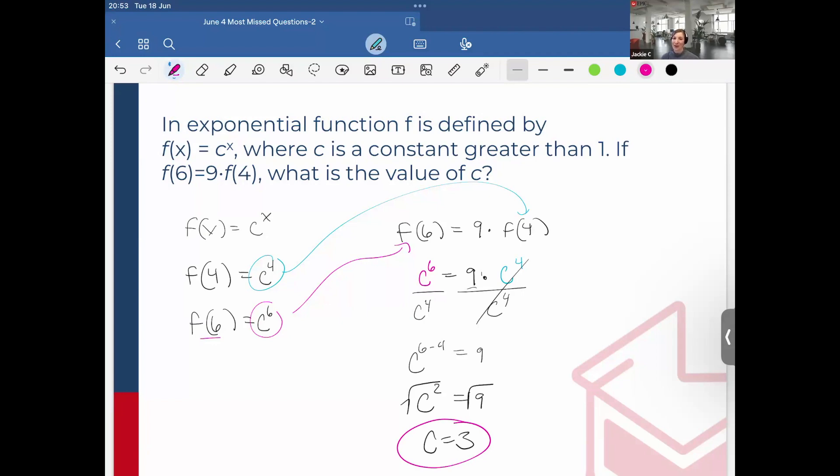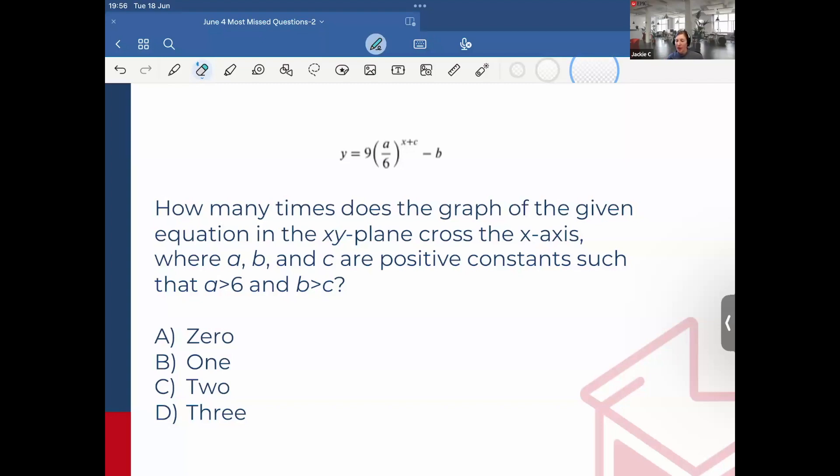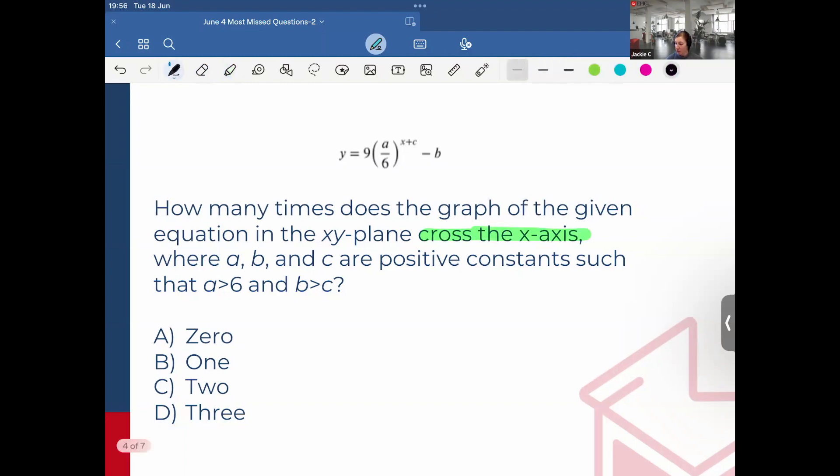So continuing our journey. Okay, so this one we have y equals 9 times (a/6) raised to the x plus c, and then minus b. How many times does the graph of the given equation in the xy plane cross the x-axis? So remember when it crosses the x-axis, y is equal to zero. Where a, b, and c are positive constants such that a is greater than 6 and b is greater than c.